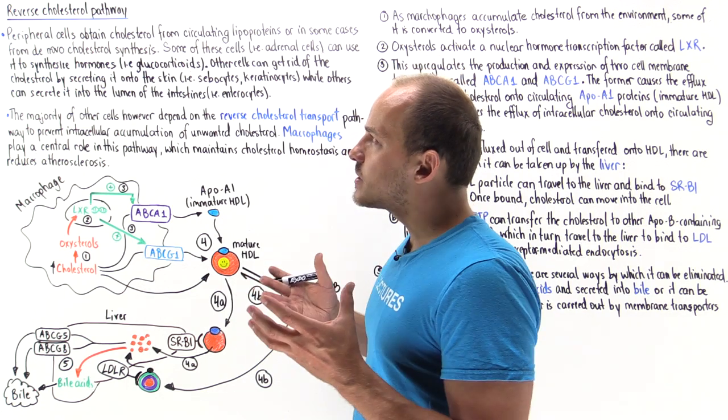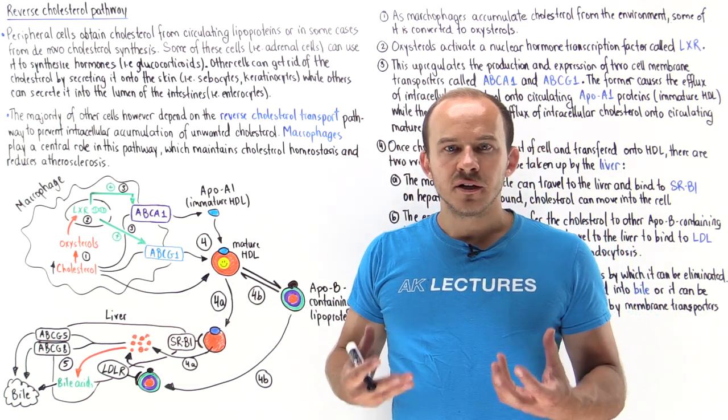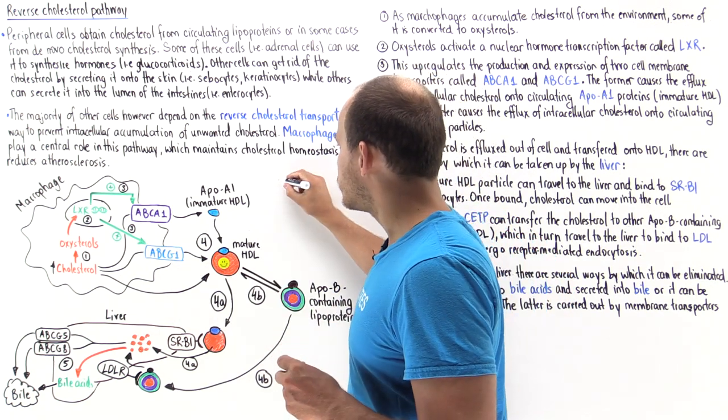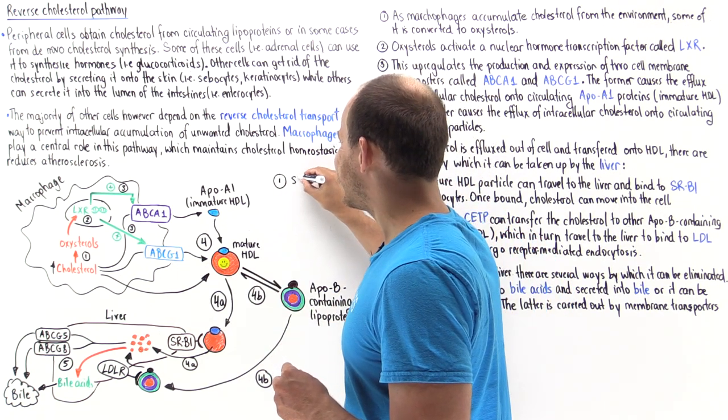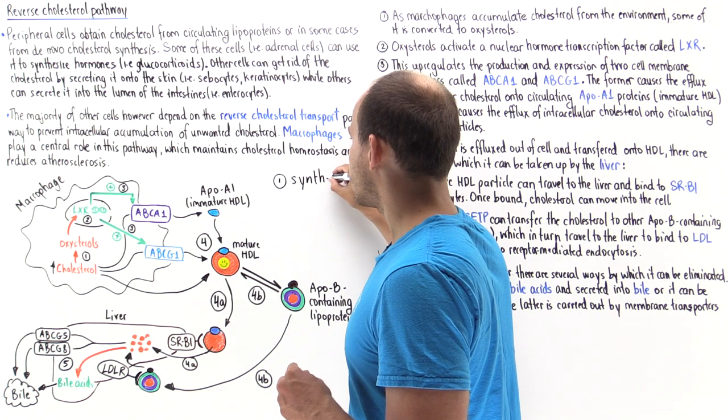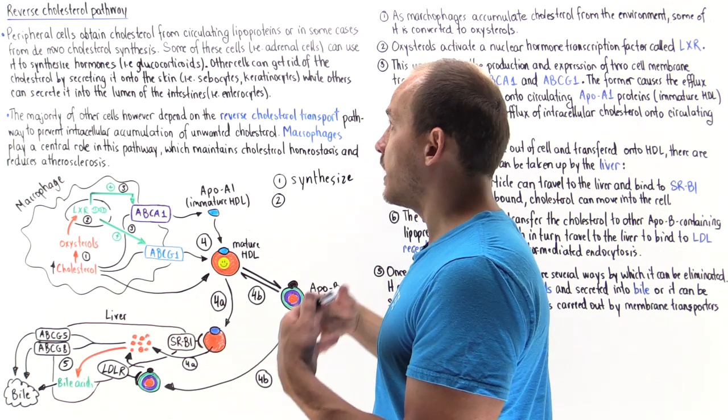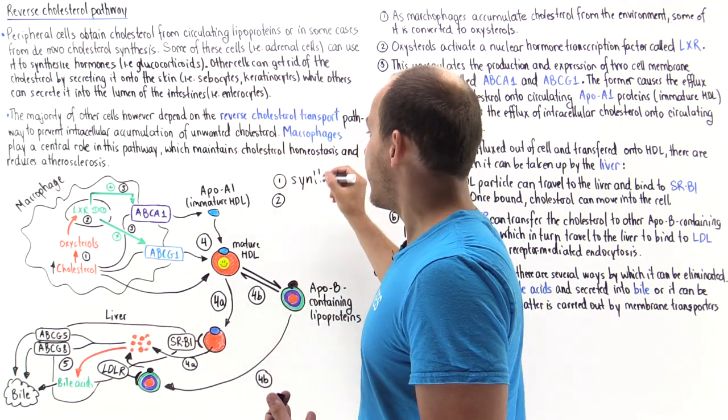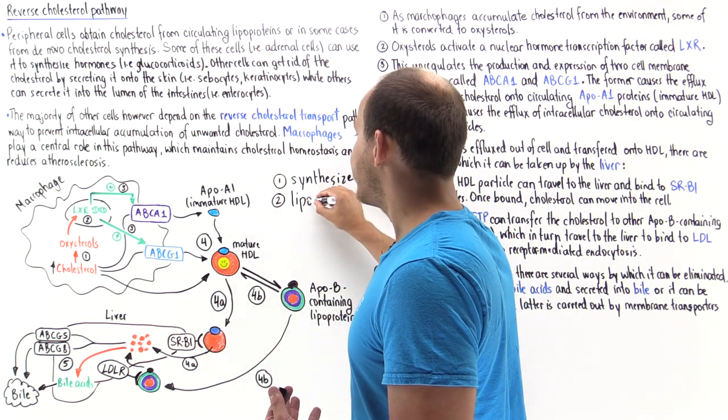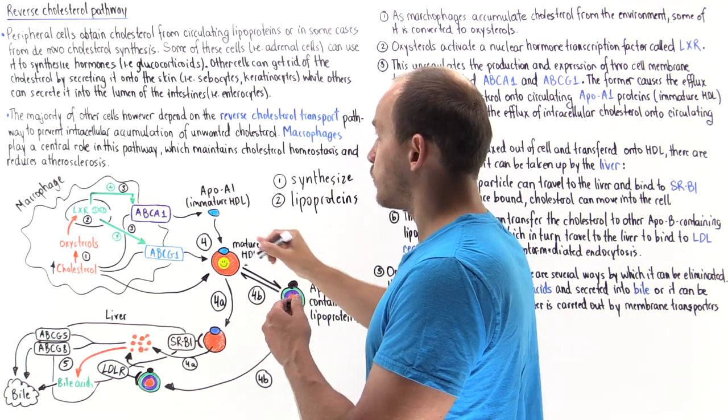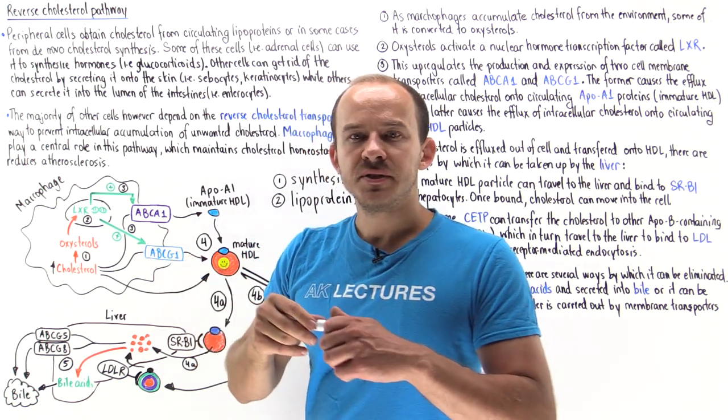Peripheral cells of the body can receive cholesterol from one of two sources. Some specialized cells of the body can actually synthesize cholesterol from scratch. But the majority of cells of the body receive cholesterol by absorbing circulating lipoproteins that carry cholesterol. These are the two ways by which peripheral cells of the body can obtain cholesterol.